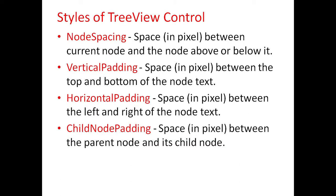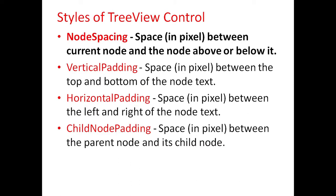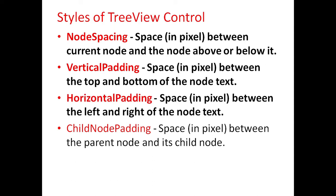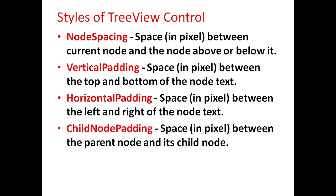Different styles of TreeView controls are: NodeSpacing, which gives the space in pixels between the current node and the node above or below it; VerticalPadding, which specifies the space in pixels between the top and bottom of the node text; HorizontalPadding, which specifies the space in pixels between the left and right of the node text; and ChildNodePadding, which specifies the space in pixels between the parent node and its child node.